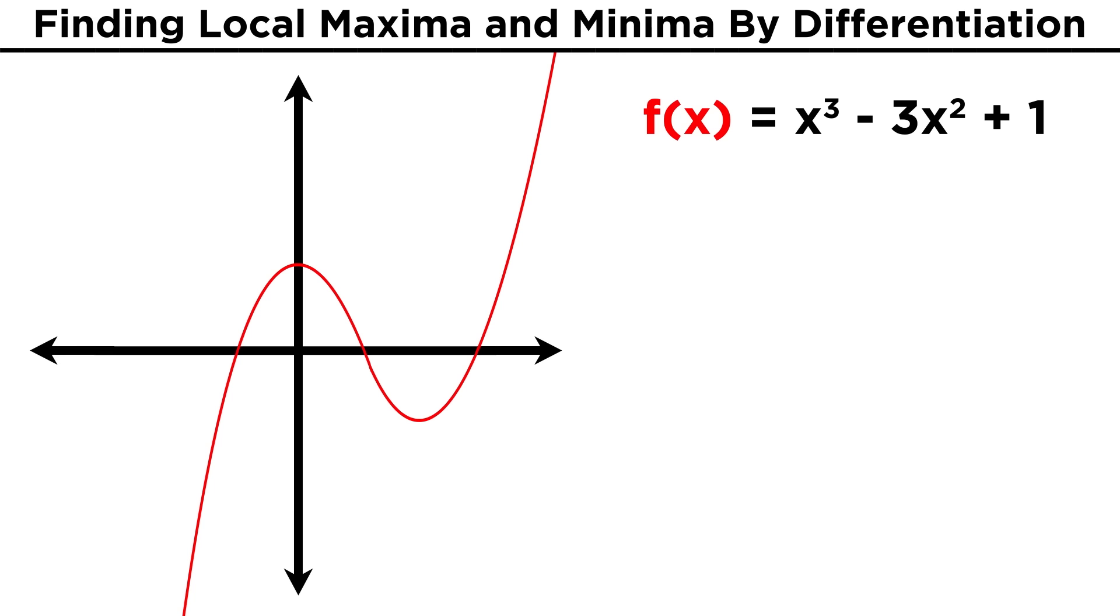Let's look at the function x cubed minus three x squared plus one. There is one local maximum and one local minimum. Where do these occur? Well as we said, let's take the derivative. That will be three x squared minus six x. We can factor out a three x from both terms to get three x times x minus two.